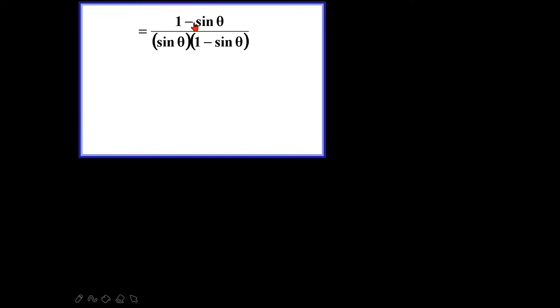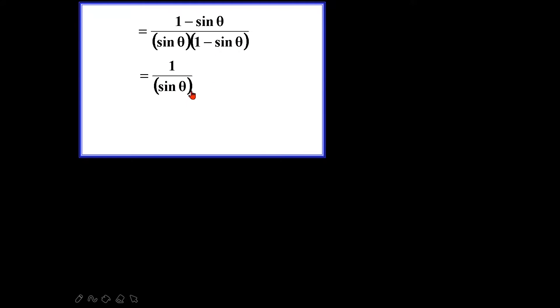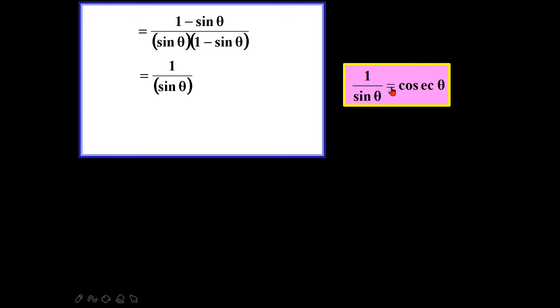I will end up with (1 minus sin θ) over sin θ multiplied by (1 minus sin θ). Is there anything I can simplify? Yes — I can simplify (1 minus sin θ) over (1 minus sin θ). What is left is 1 over sin θ. And 1 over sin θ is cosecant θ. So that is my answer on the left-hand side.